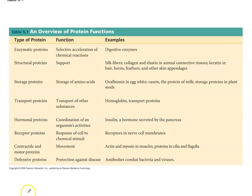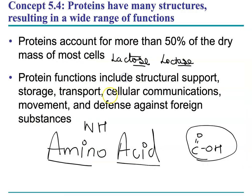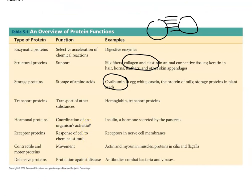Proteins also provide structural support: collagen and elastin are extracellular fibers between cells. As you grow older, collagen and elastin lose their shape and integrity — that's how you get wrinkles. They form storage proteins: ovalbumin, which is egg whites, contains nutrients required for cell growth and development, functioning as a storage protein.